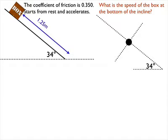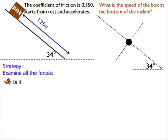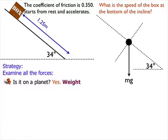My strategy is first to identify the forces. I'm going to examine all the forces that I know that can affect the box directly. Anything that's touching the box is what I'm talking about. So the planet affects the box directly. Is it on a planet? The answer is yes. Because the answer is yes, it has weight. Weight we define as W equals MG, and it goes straight down always.